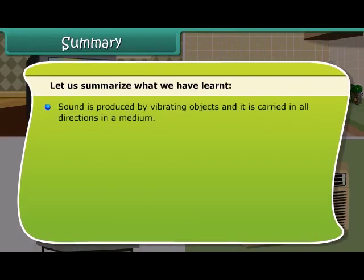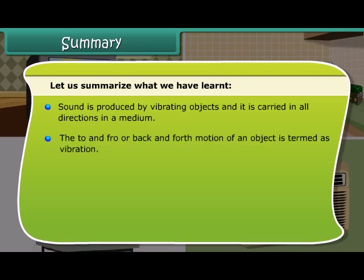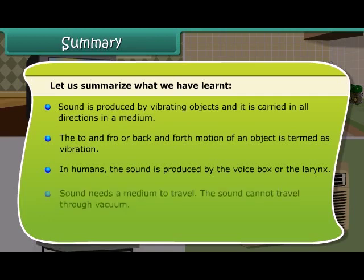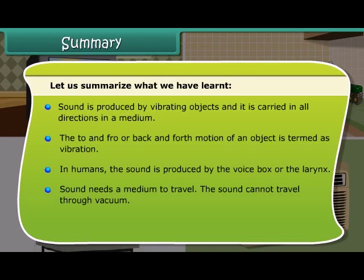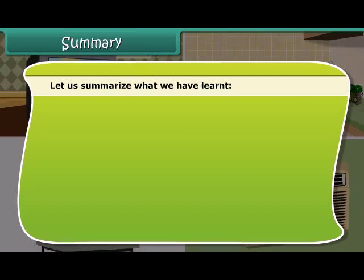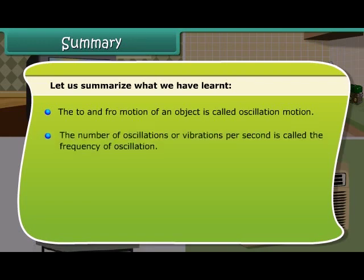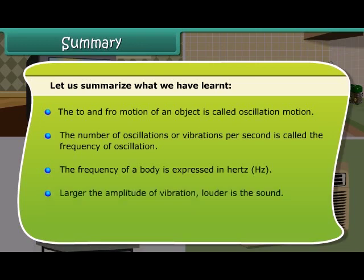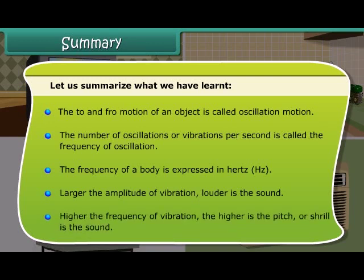Summary: sound is produced by vibrating objects and is carried in all directions through a medium. The to-and-fro or back-and-forth motion of an object is termed as vibration. In humans, sound is produced by the voice box or the larynx. Sound needs a medium to travel and cannot travel through vacuum. We hear sound through our ears. The maximum displacement is called the amplitude of vibration. The number of oscillations per second is called the frequency, expressed in hertz. Larger the amplitude, louder is the sound. Higher the frequency, higher is the pitch.